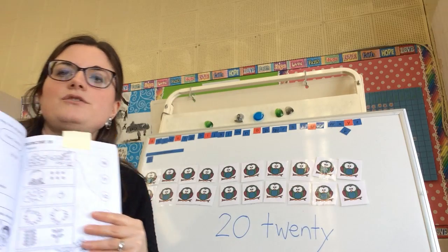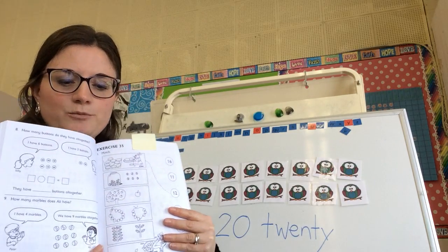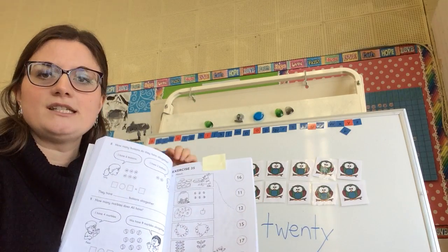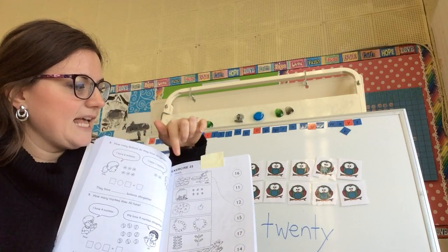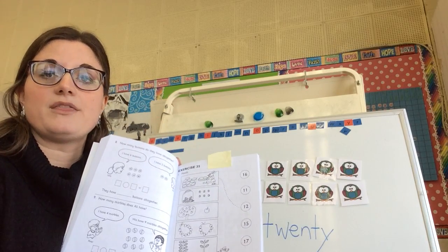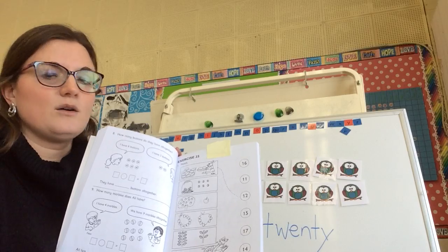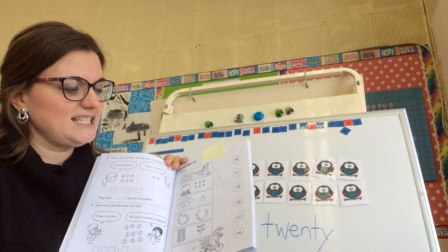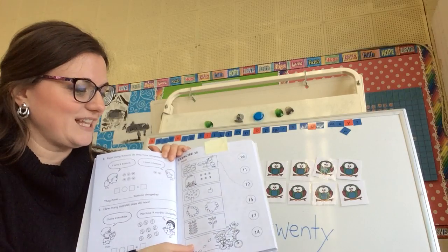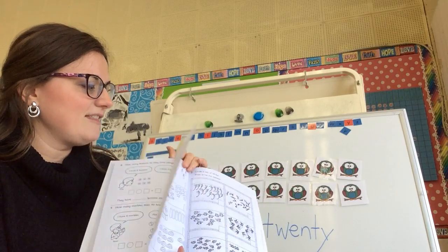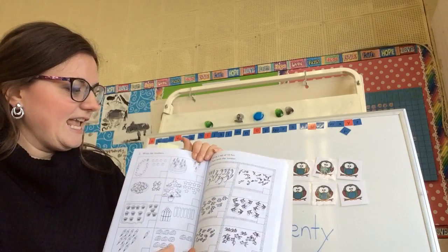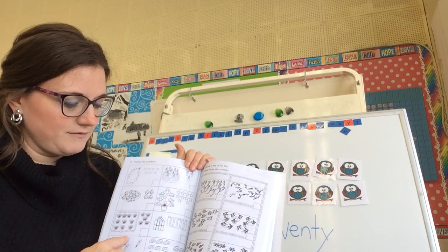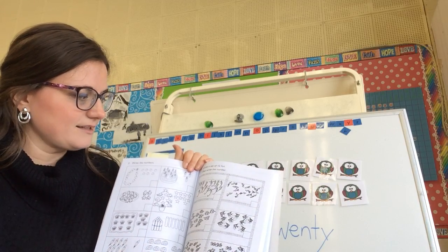What I want you to do for your work today in your workbook is exercise thirty-five. You're going to count the number of items, and I want you to line it up with the number to practice what our eleven, twelve, thirteen, fourteen, fifteen, sixteen, seventeen, eighteen, nineteen, twenty numbers look like. So you're going to match them up, and then turn the page over and count and write the number in each of the boxes.